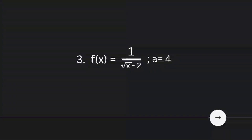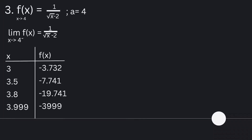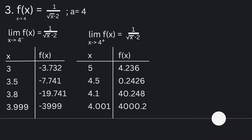And last, for number 3, we have f of x is equal to 1 over the square root of x minus 2, if a is equal to 4. Again, we will use a table of values to estimate the limit of the function from the left and from the right. By using the table of values, we can see that the limit of the function is equal to negative 3,999.74 from the left.